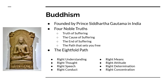Buddha was a practicing Hindu and just saw the Eightfold Path and the Four Noble Truths as an alternate way to work through samsara. By working your way through samsara you will reach moksha — only in Buddhism, moksha is called Nirvana.